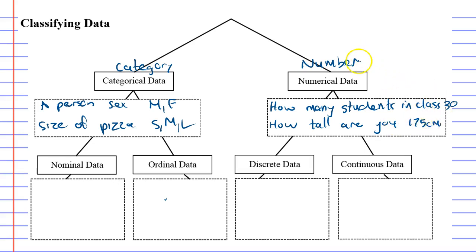So notice that numerical data you get numbers and for categorical data you actually get usually words or letters. Now each of these classifications are also split into another two classifications.